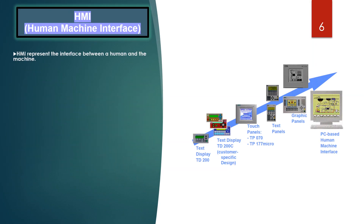In this slide we will discuss the Human Machine Interface. HMI represents the interface between humans — the operators — and the process, meaning the machine or system. The controller has actual control over the process, and HMI is used for representing the process; for example, the process is displayed on operator panels. HMI is also used for operating the process — the operator can control it through a GUI (graphical user interface), specify a set point for the controller, or start a function or motor.